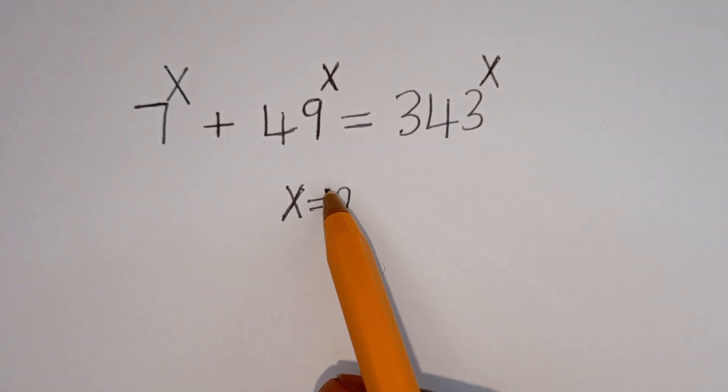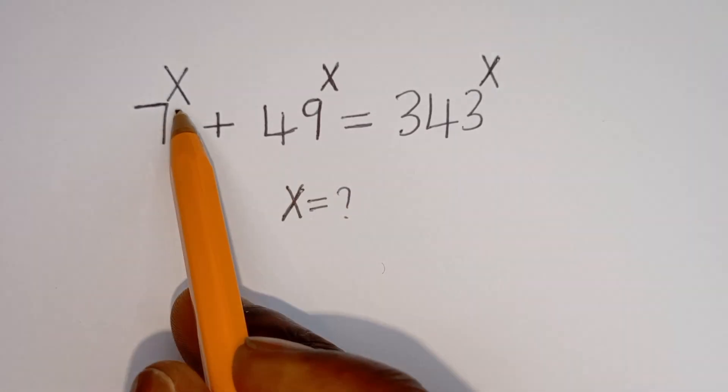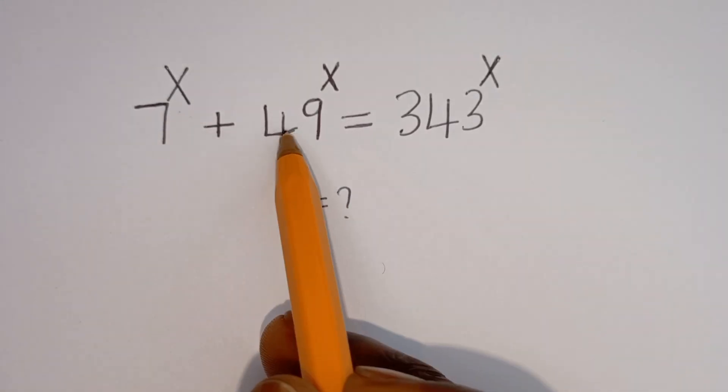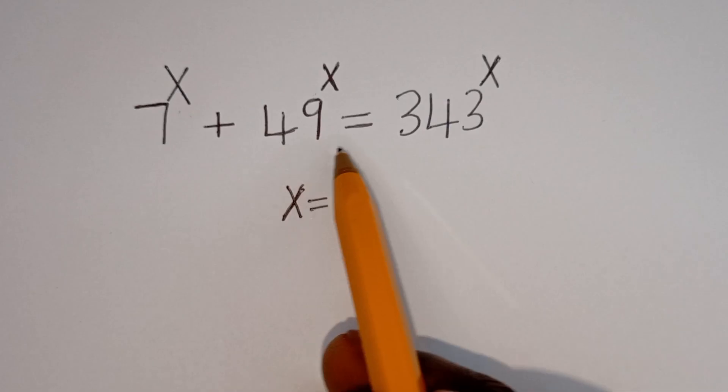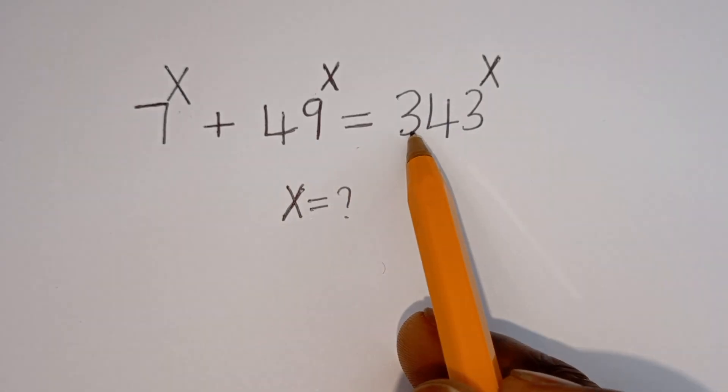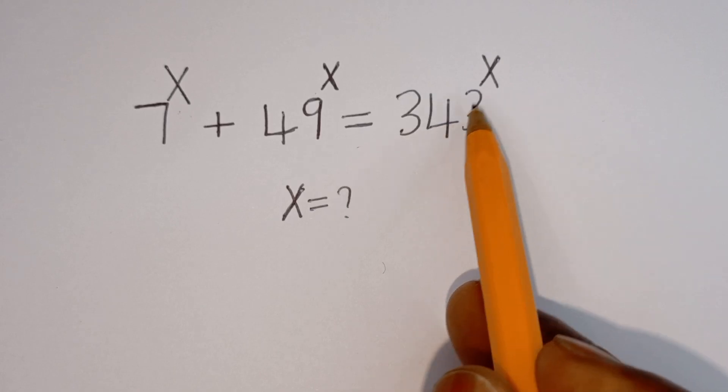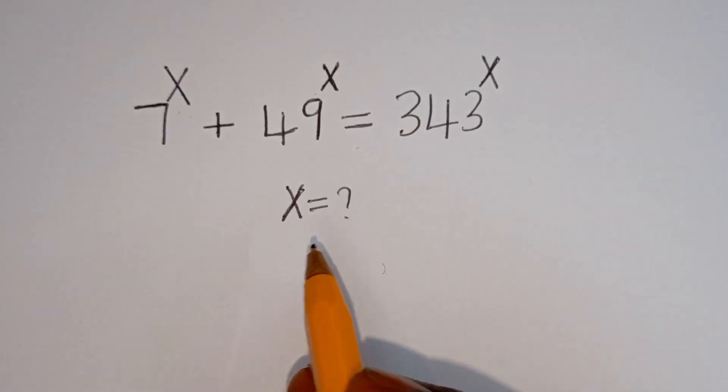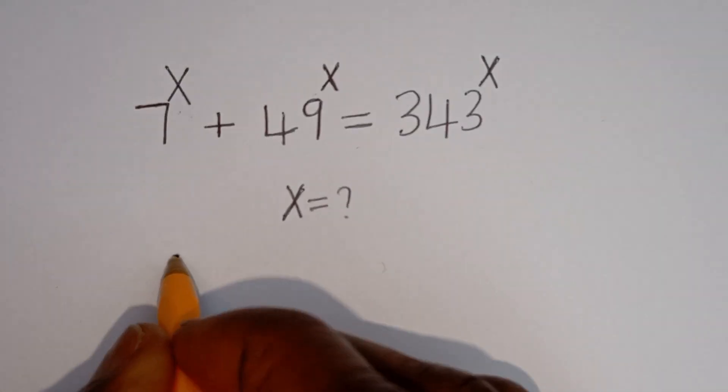Hello, how to solve for S in this equation: 7 to the power of X plus 49 to the power of S is equal to 343 to the power of X. Solution.